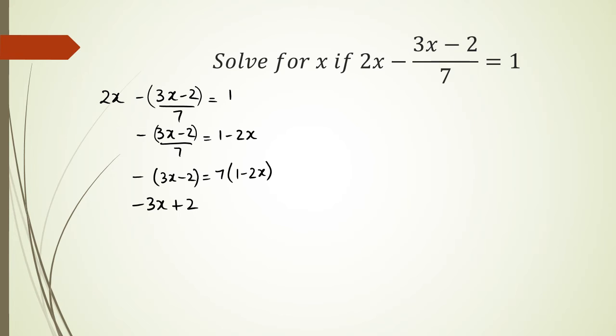Notice how originally we had -2 but now it's changed to +2 because of this negative sign. We now have 7 times 1 is 7, 7 times -2x is -14x. Rearranging, I have 14x - 3x + 2 = 7, then 11x + 2 = 7, 11x = 5, and x = 5/11.